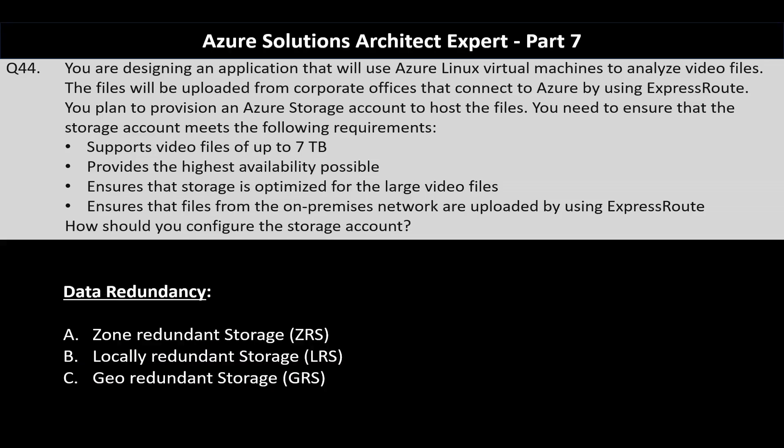The next part of the question talks about the type of data redundancy you'll have to choose. Your options are zone-redundant storage, locally-redundant storage, and geo-redundant storage. Following on from the previous explanation, the redundancy type you will choose here is geo-redundant storage, as it offers the highest availability and durability by replicating data to a secondary region.